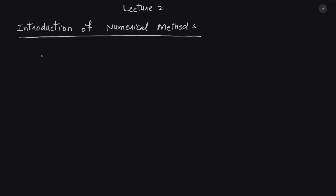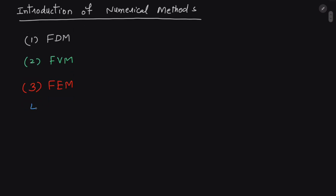There are three famous numerical methods. The first one is the finite difference method, FDM. The second one is the finite volume method, which we are going to discuss in this lecture series. The third one is the finite element method. Every numerical method has its own pros and cons, and we will talk about that later on. Sometimes we also add the spectral method to this list.